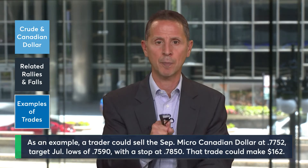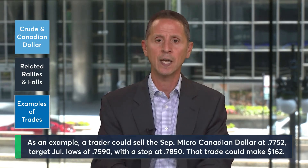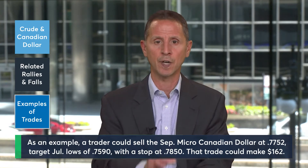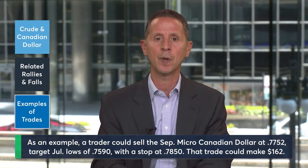If a trader believes that the Canadian dollar versus the U.S. dollar will fall from here, perhaps due to continued weakness in crude, they could express that by selling the September Micro-Canadian dollar futures contract at spot 7752 and target a return to last week's lows of spot 7590. A stop for this trade could be placed above at spot 7850. This trade could make $162 if your target is reached and risks $98 if you're stopped at your level.